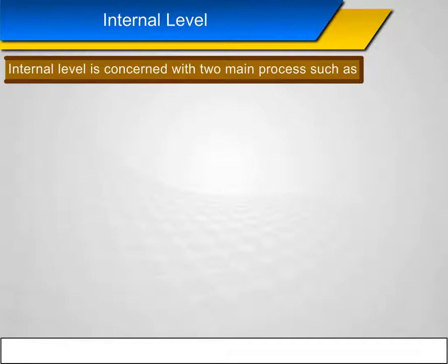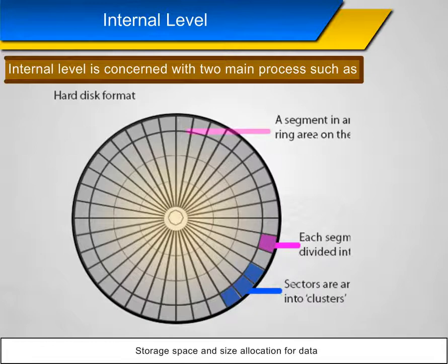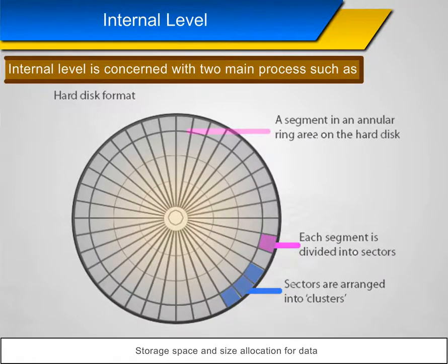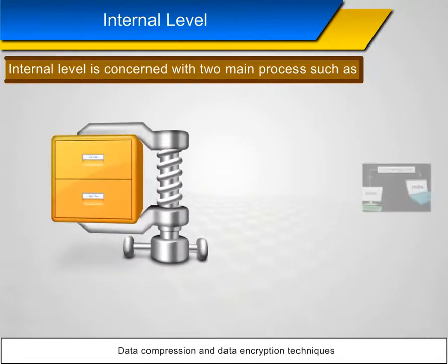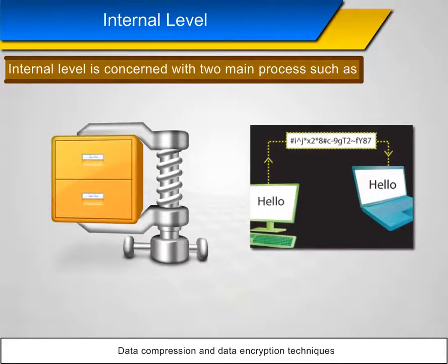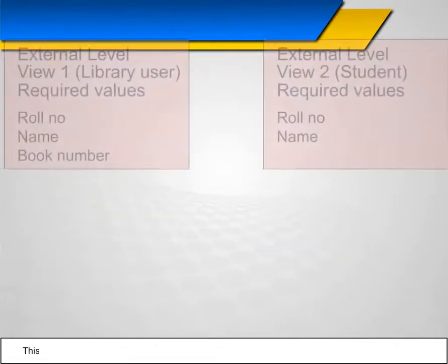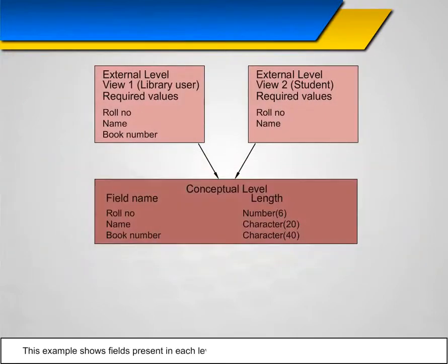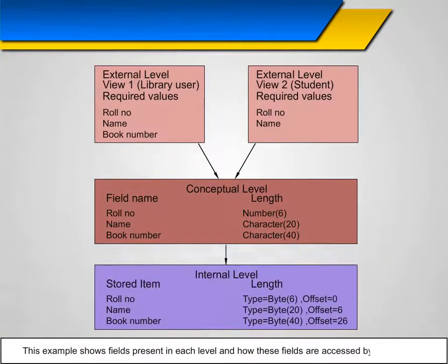The internal level is concerned with two main processes: storage space and size allocation for data, and data compression and data encryption techniques. This example shows the fields present in each level and how these fields are accessed by another level.